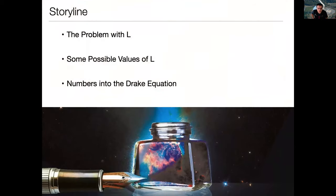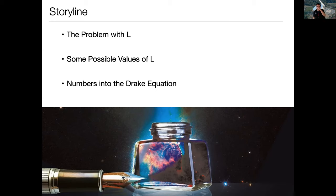What we want to do today is start with: what is the problem with L? Why is L so hard compared to all of the other numbers in the Drake equation? We'll talk about some possible values of L, use ancient civilizations and other speculations to help us guess what the value of L might be. At the end, we'll take all the numbers we've been discussing and drop them back into the Drake equation spreadsheet to talk about what it tells us about the Milky Way galaxy.